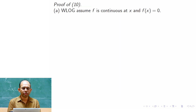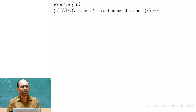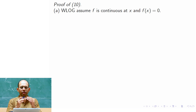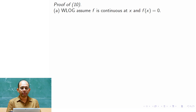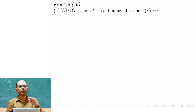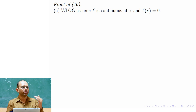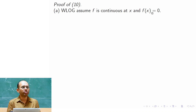Without loss of generality, we assume f is continuous at x and that f(x) = 0. We must assume f is continuous because u agrees with f on the boundary, so if f itself is not continuous, u cannot be continuous. We can always reduce to f(x) = 0 because if f(x) = c, we subtract c from u; the new function still solves the heat equation and has boundary data 0 at x.